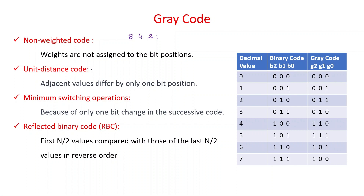Grey code is also called unit distance code. In adjacent or successive codes, there is only a change of one bit from the previous level to the next level. For example, going from 0 to 1, only G0 changes from 0 to 1 while G1 and G2 remain the same. From 3 to 4, only G2 changes from 0 to 1 while G1 and G0 are the same. So the distance between successive codes is only one unit.